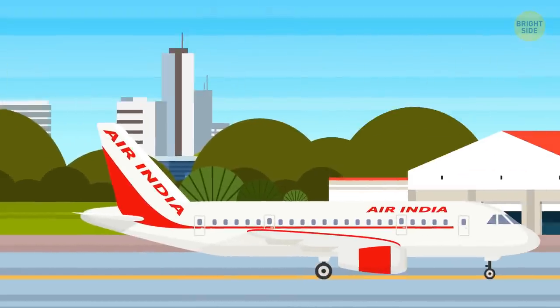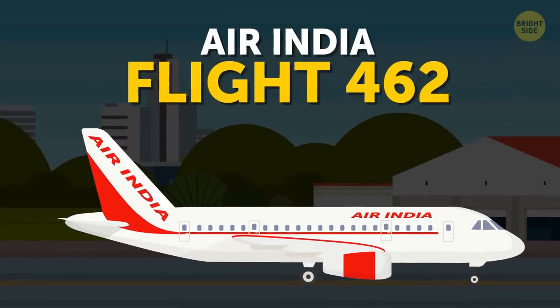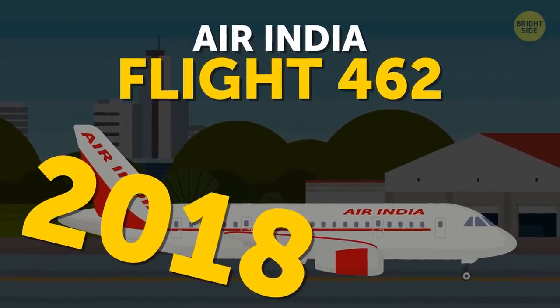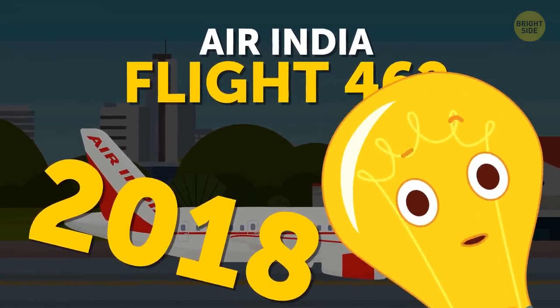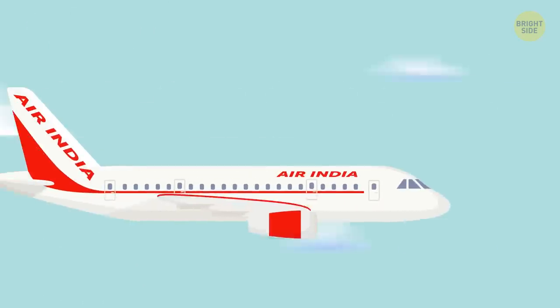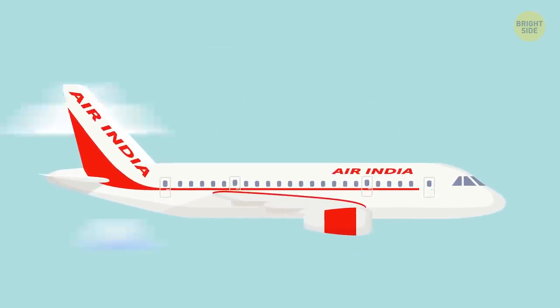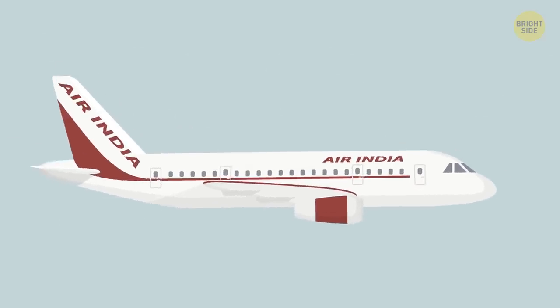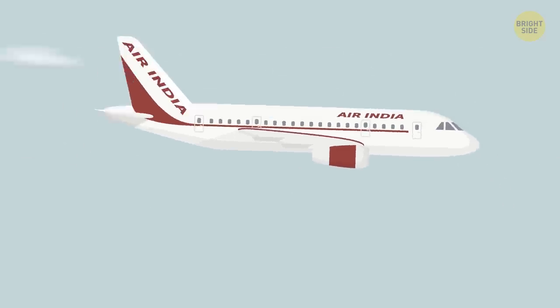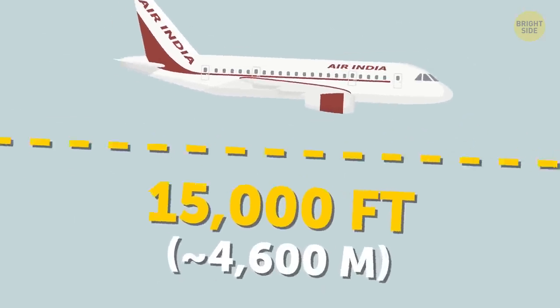An accident that happened with Air India Flight 462 in 2018 can prove just how unbreakable airplane windows are. The airliner, carrying 240 passengers, hit unusual severe turbulence shortly after takeoff at the altitude of about 15,000 feet.